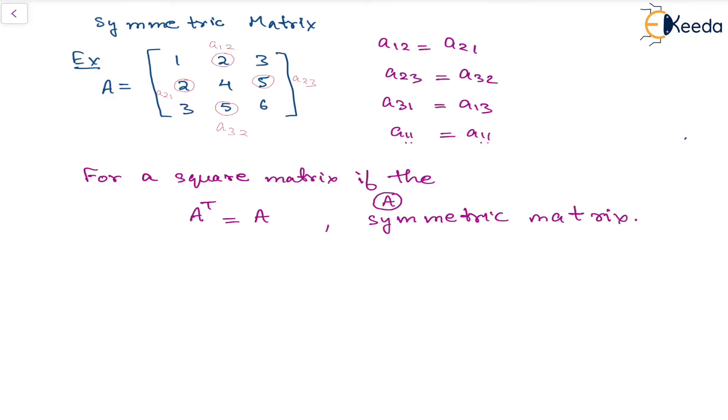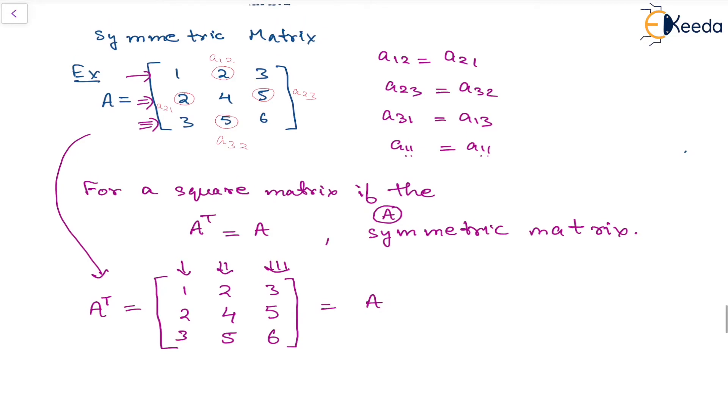We can apply the same here on, for the given example, that is A matrix. For this case A transpose, which is obtained by interchanging the rows and columns. Let's say this is the row one, so we'll be putting here in column one. So this becomes one, two, three. This row two in column two as two, four, five and this row three in column three. So this is three, five, six. So we can see that this A transpose is same as the matrix A itself. So this matrix become a symmetric matrix.